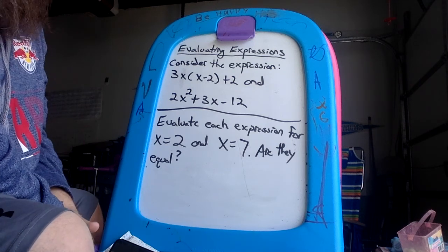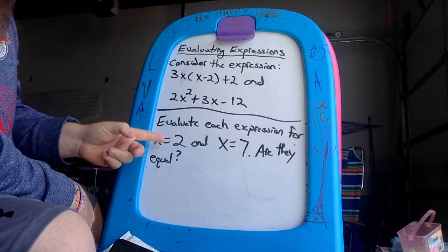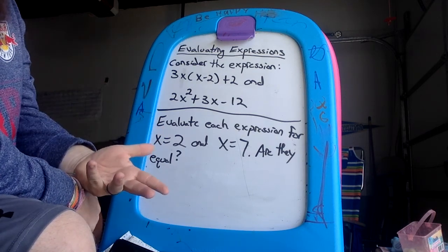So you have two different expressions here and what I'm going to ask you guys to do is evaluate it two times. The first time you evaluate it, take the unknown number with the variable.